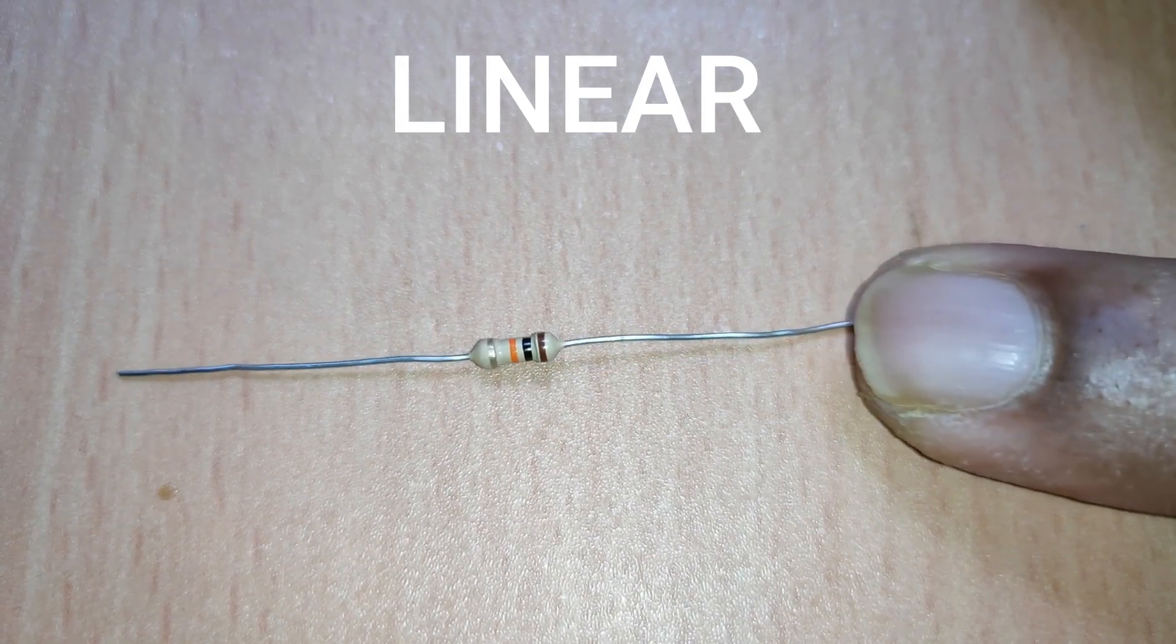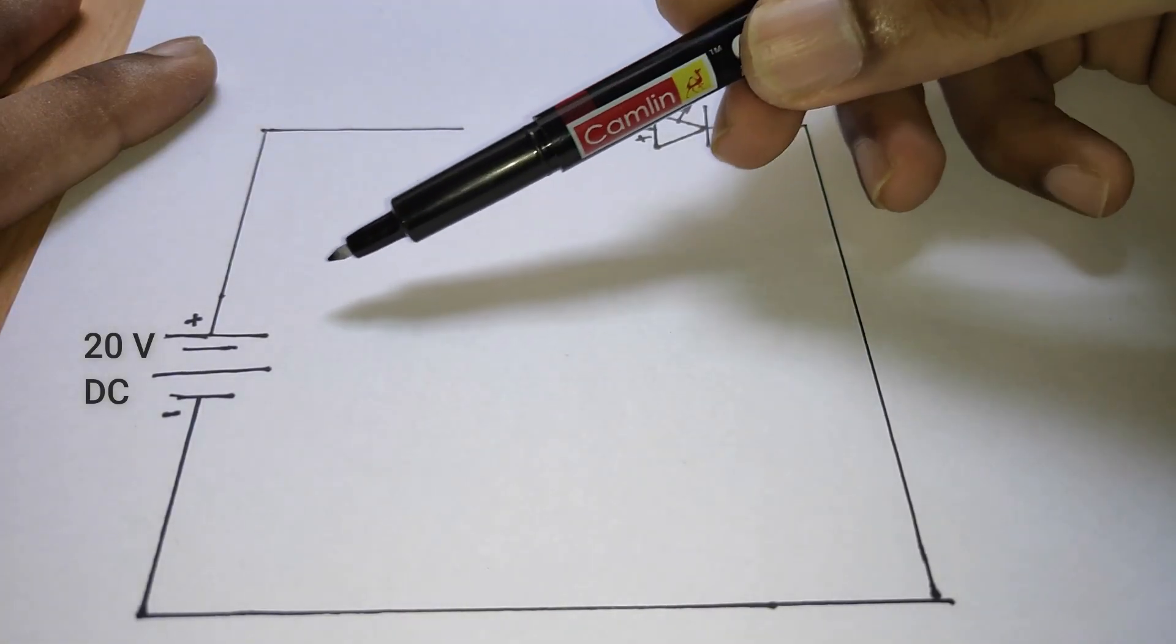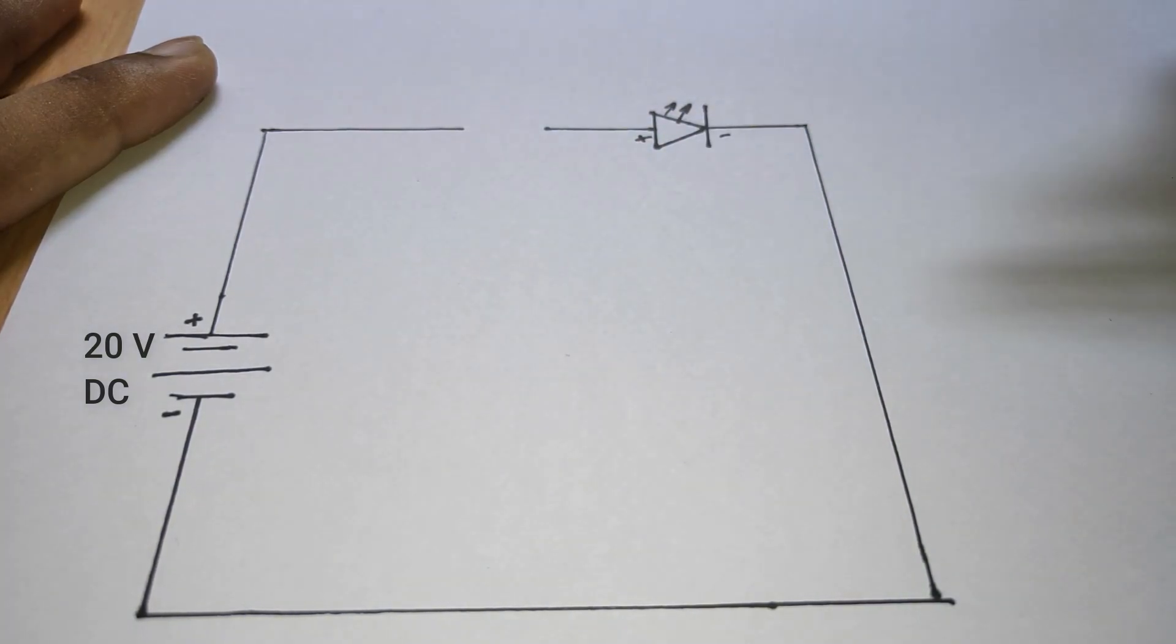And here comes the role of the resistor. It can solve the problem by limiting the excess current flowing in the circuit and dissipating it in the form of heat.